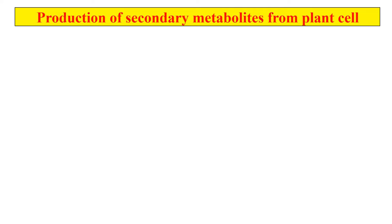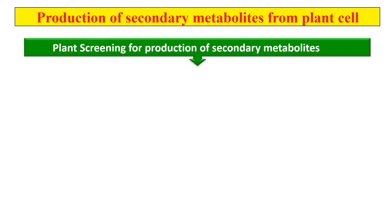The first step is to screen the plant for the production of secondary metabolites. That means we have to choose the plant which is producing that particular secondary metabolite. Once we choose that particular plant, we can proceed for the production of secondary metabolites from it. So the first step is to screen out the secondary-metabolite-producing plant.